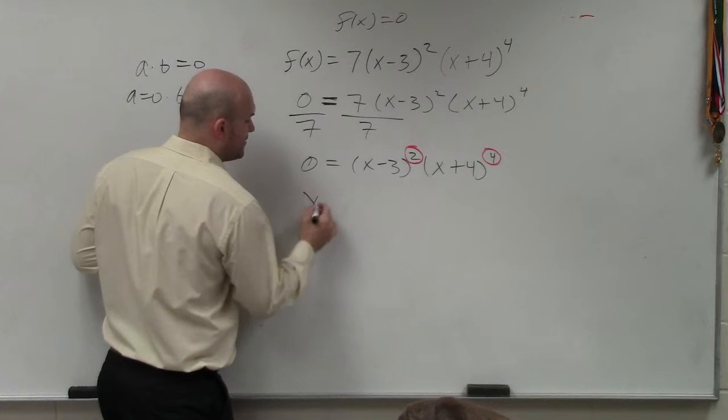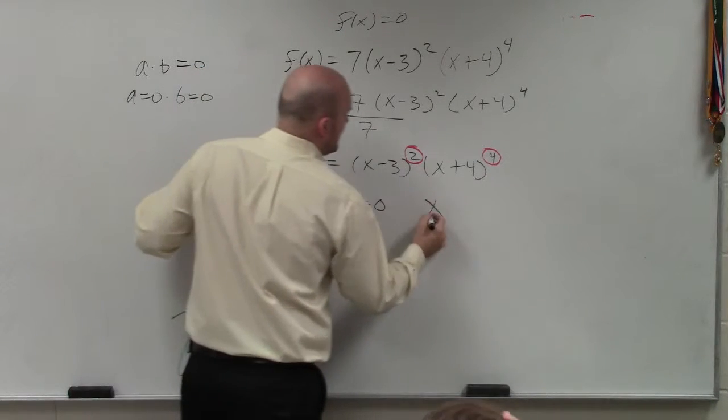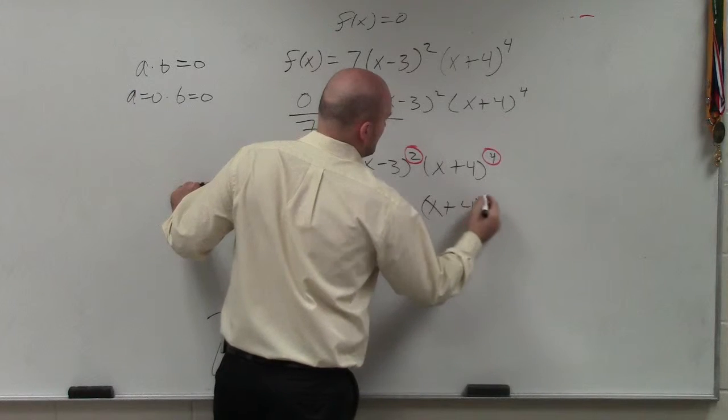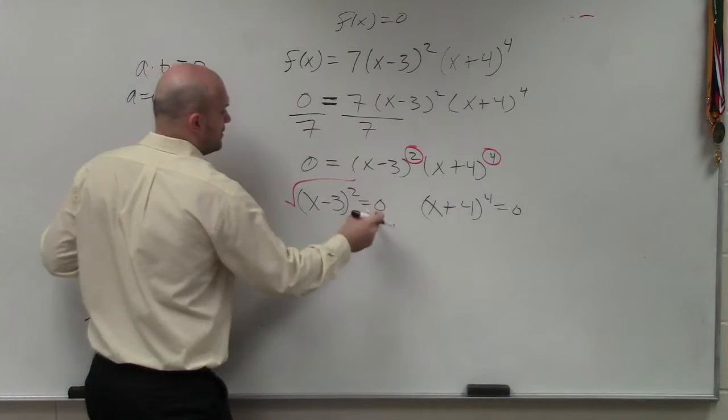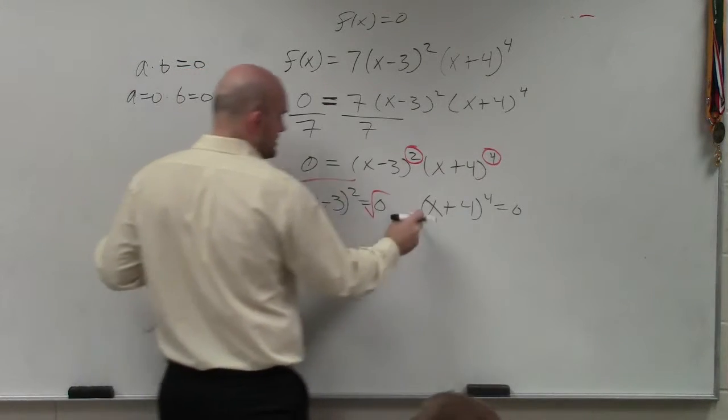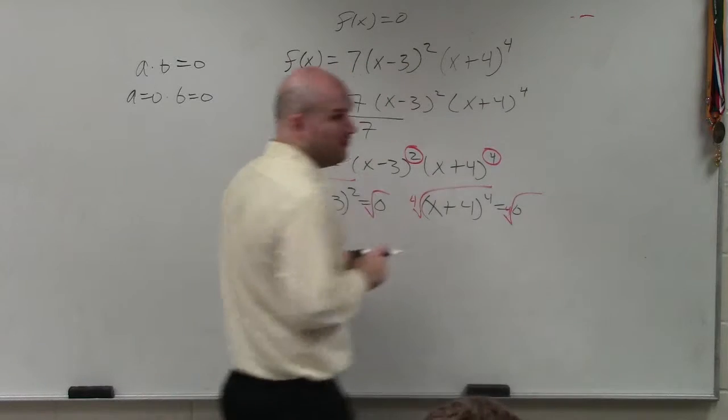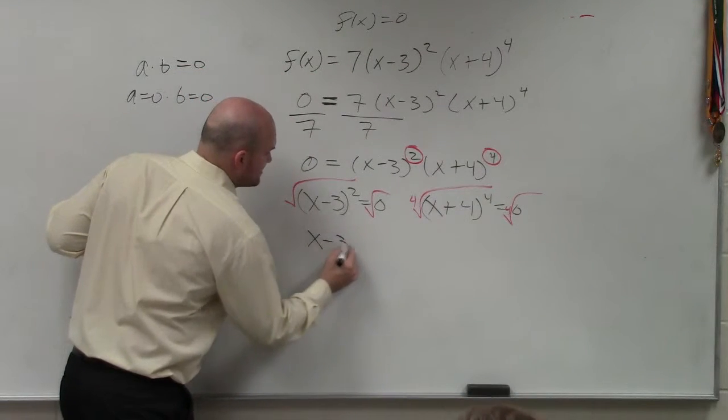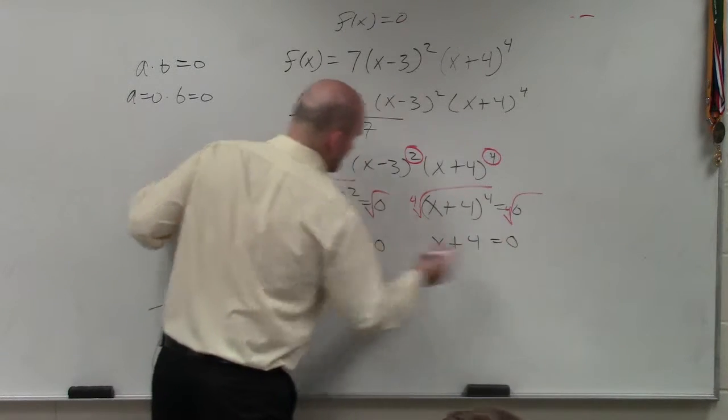So now I use the zero product property. (x - 3) squared equals 0, and then (x + 4) raised to the fourth equals 0. Now to go ahead and solve, I take the square root of both sides. To undo the fourth root, I take the fourth root of both sides. And I have x - 3 equals 0.